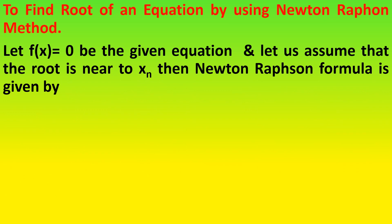To find the root of an equation by using the Newton-Raphson method, the procedure is: let f of x equals 0 be the given equation and let us assume that the root is near to xn. Then the Newton-Raphson formula is given by xn+1 equals xn minus f(xn) divided by f dash of xn, where f dash of xn is the differentiation of f of x.